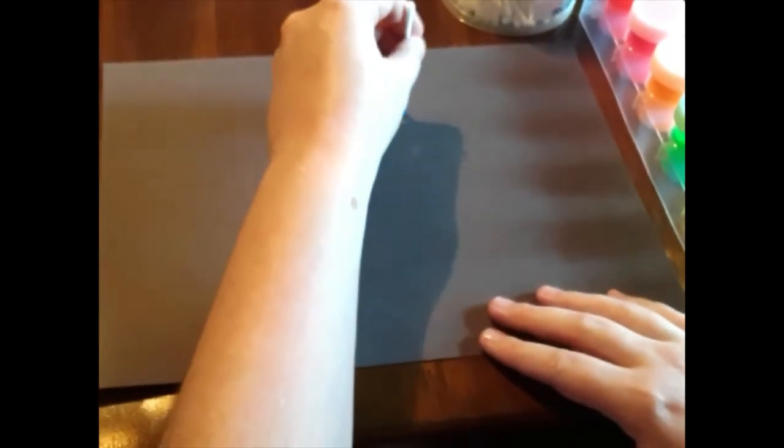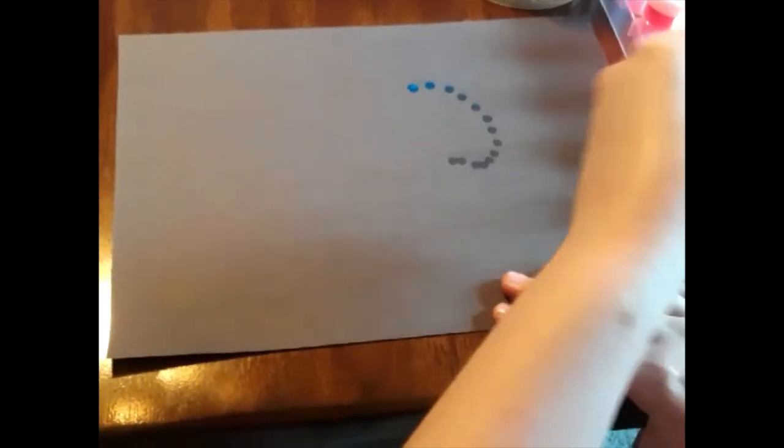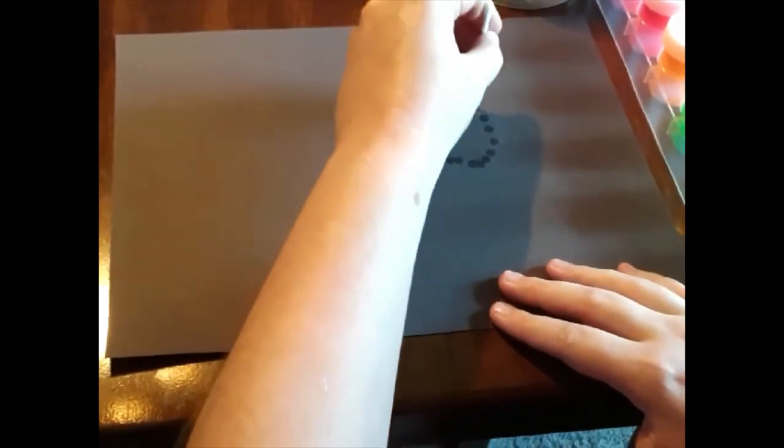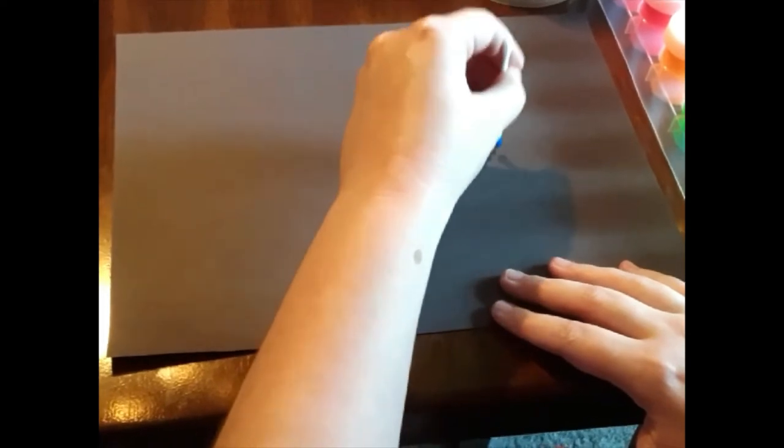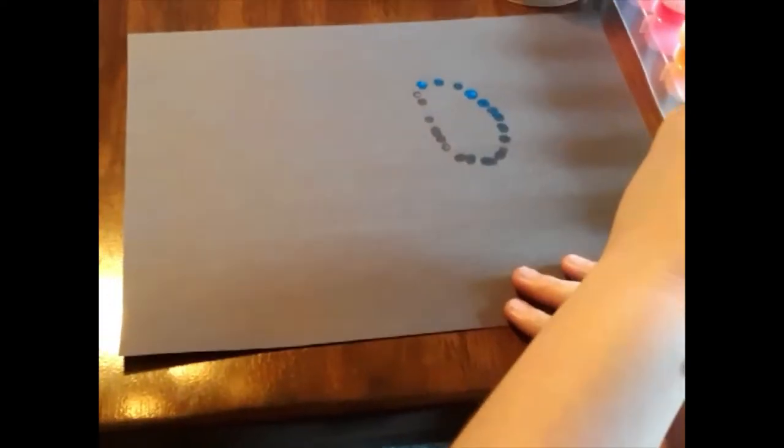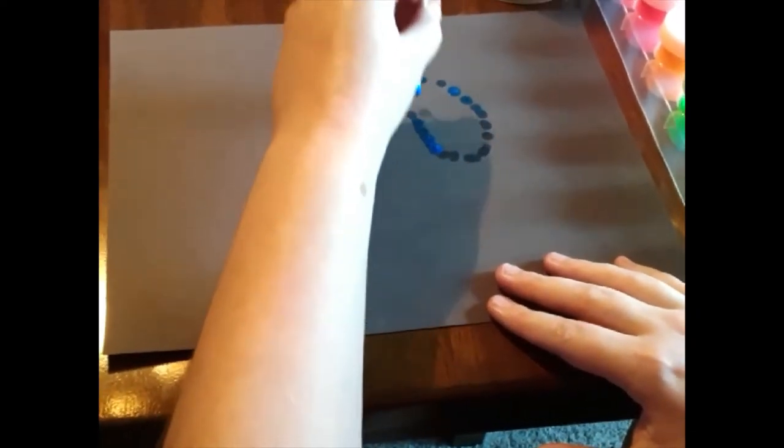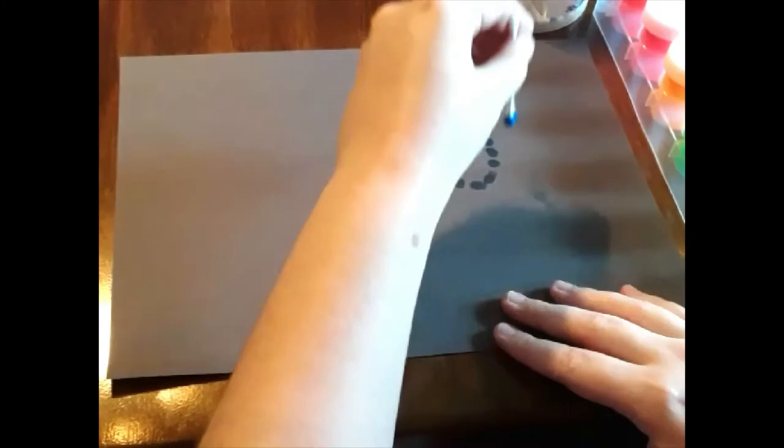Then you're going to start painting what you want to make with dots. When you run out of paint, just dip it back in and start going over the dots if you need to or add more. I want mine to be very blue, so I'm adding quite a few dots here.